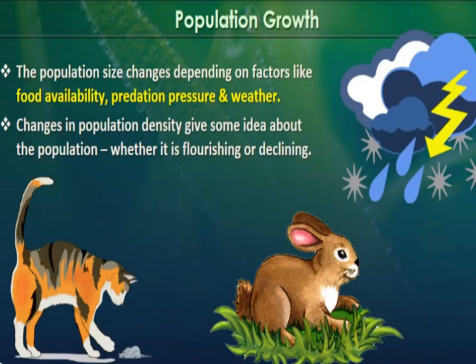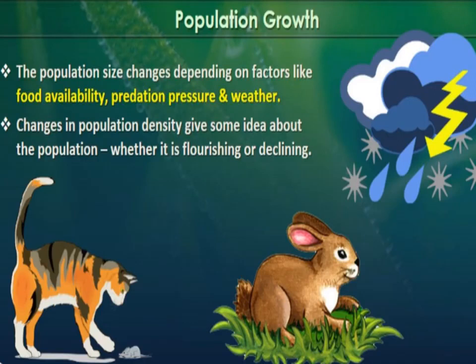Our next topic is population growth. Population size changes depending on factors like food availability, predation pressure, and weather. These are the factors due to which population size either increases or decreases. Changes in population density give us an idea about whether the population is flourishing or declining.